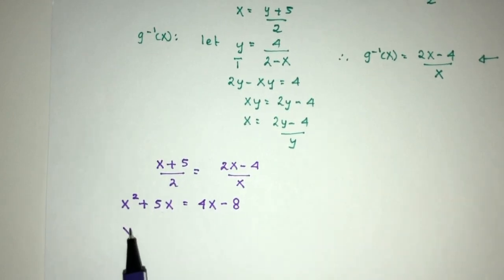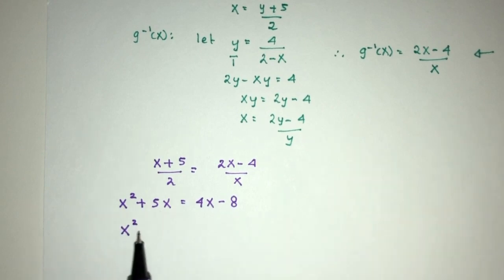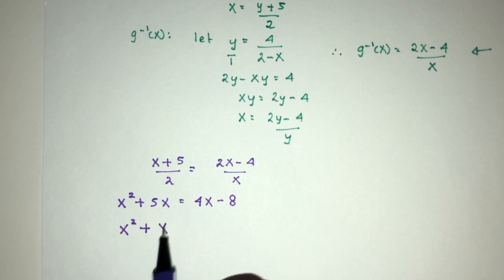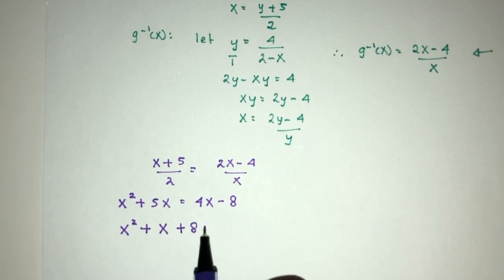Send everything to one side. You will have x² plus (5-4), that's +1x, and +8 equals 0.